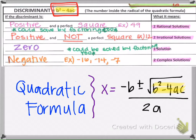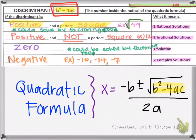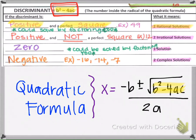The discriminant is the number in the quadratic formula that's inside the radical, and that number tells us some important things. If when you do B squared minus 4AC the number is positive and a perfect square — for example, 49 — meaning the square root gives a whole number like 7 — then the discriminant tells us that we're going to have two rational solutions. Rational means something that can be written as a fraction, like 5 and 6, or two-thirds and 5.